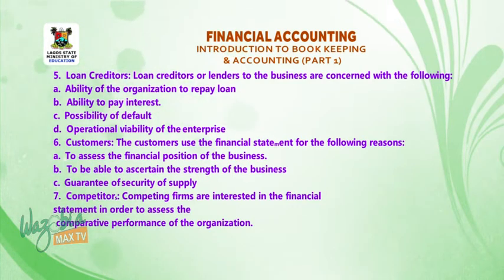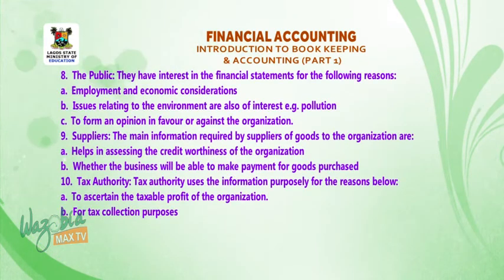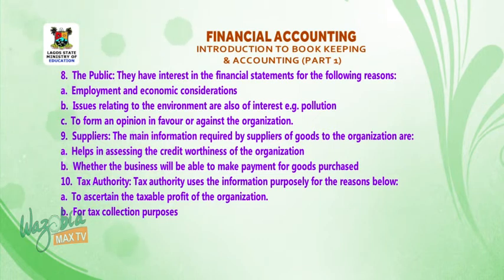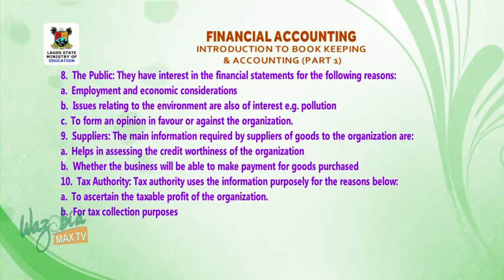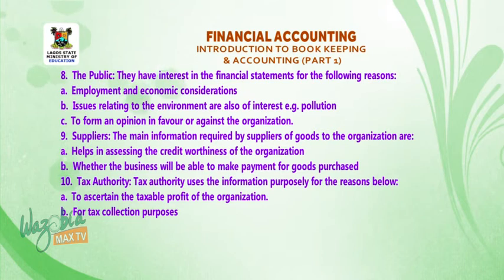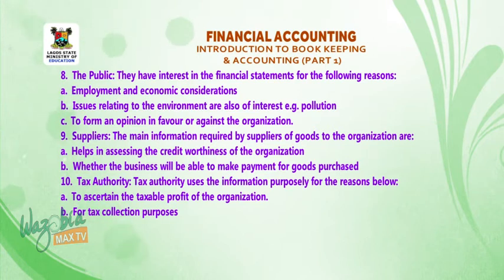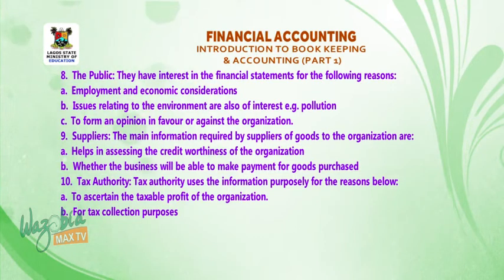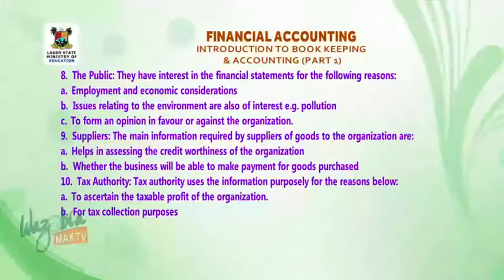Eight, the public. They have interest in the financial statement for the following reasons: a) employment and economic considerations; b) issues relating to the environment, e.g., pollution; c) to form an opinion in favor of or against the organization. Nine, suppliers. The main information required by suppliers of goods to the organization: a) helps in assessing the credit worthiness of the organization; b) whether the business will be able to make payment for goods purchased.